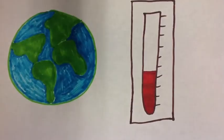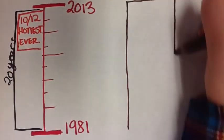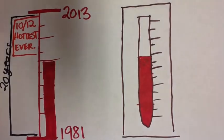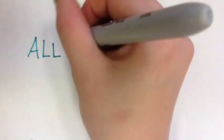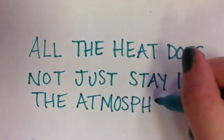The temperature of the Earth has been rapidly increasing. Since 1981, we have had 20 of the warmest years on record, and 10 of the past 12 years have been the hottest ever. In the 2000s, the solar output actually declined, and the Earth still continued to warm. All the heat does not just stay in the atmosphere.